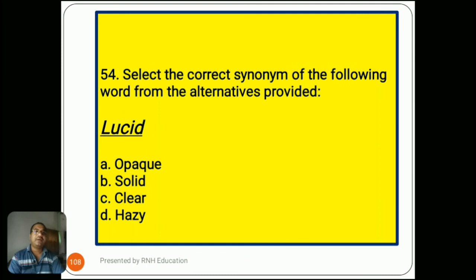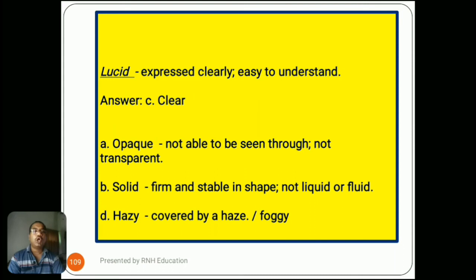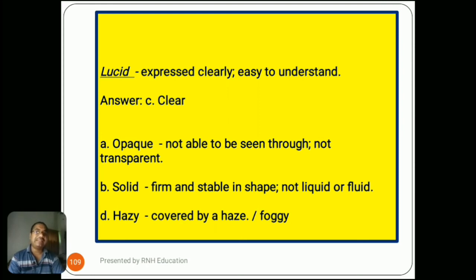Question number 54: 'Select the correct synonym — lucid.' Options are A) opaque, B) solid, C) clear, D) hazy. Lucid means expressed clearly, easy to understand. The answer is C) clear. Option A, opaque, means not able to be seen through, not transparent. Option B, solid, means firm and stable in shape, not liquid or fluid. Option D, hazy, means covered by haze or foggy.